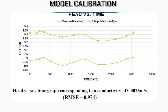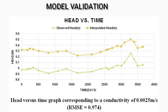The results of our project: the calibration curve corresponding to a hydraulic conductivity of 0.0025 meters per second is shown. From the graph, it can be concluded that the simulated data is best suited to the field conditions. Hence, a hydraulic conductivity of 0.0025 meters per second is further chosen for model validation and future groundwater level predictions. Validation results also showed that good correlation exists between observed and calculated head.